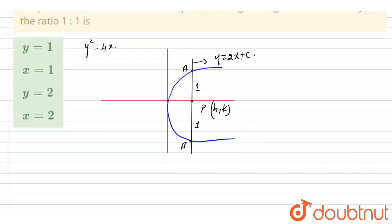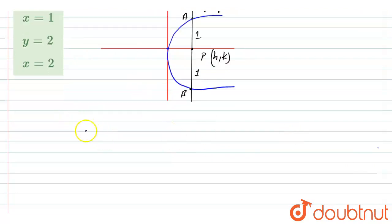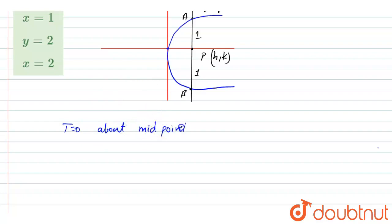Now I'm going to find the midpoint here. So I'm going to take the midpoint, and the equation of the chord passing through A and B.